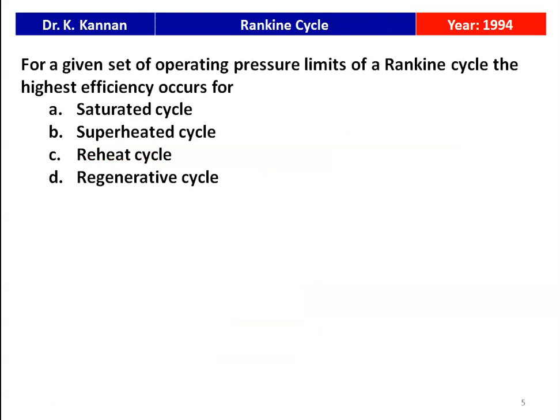The next question: for a given set of operating pressure limits of a Rankine cycle, the highest efficiency occurs in — saturated cycle, superheated cycle, reheat cycle, or regenerative cycle? The efficiency of the Rankine cycle depends on the mean temperature of heat addition. The basic cycle is the saturated cycle, improved cycle is the superheated cycle, and reheat and regenerative are advanced improvements. Among the four options, the efficiency will be higher in the case of the regenerative cycle.